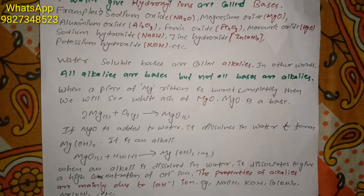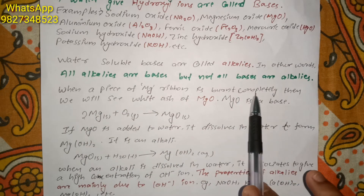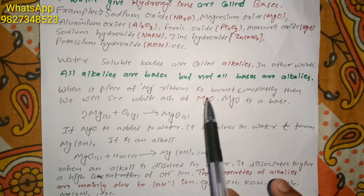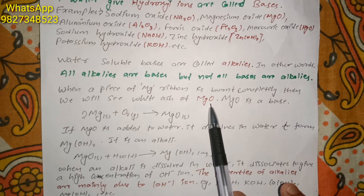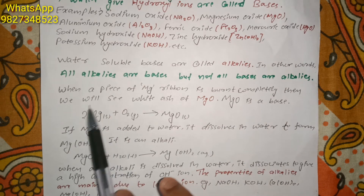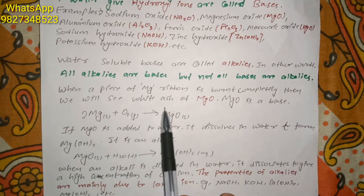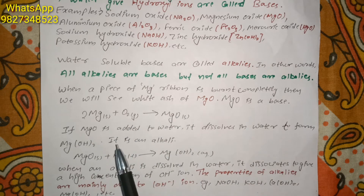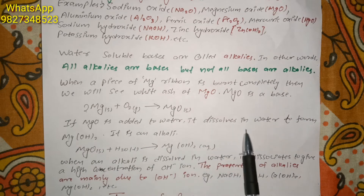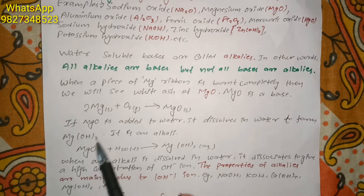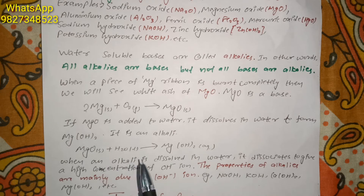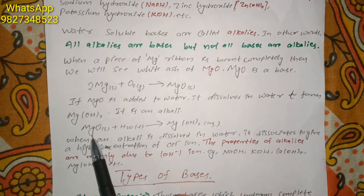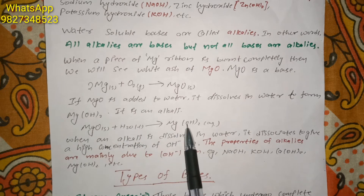Now let's see how magnesium oxide is in the category of base. Before that, let's see how magnesium oxide is prepared. When a piece of magnesium ribbon is burnt completely, we see white ash of MgO. That white ash is magnesium oxide, and magnesium oxide is a base. The reaction is: magnesium plus oxygen gives magnesium oxide (solid). If magnesium oxide is added to water, it dissolves to form magnesium hydroxide, which is an alkali.